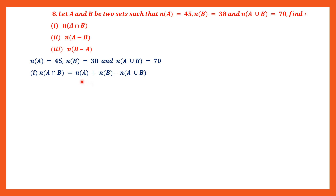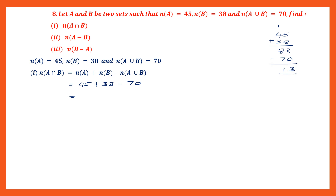The formula is: cardinal number of A plus cardinal number of B minus cardinal number of A union B. Substituting: 45 plus 38 is 83, minus 70 gives us 13. We have found the cardinal number of A intersection B, and that is 13.